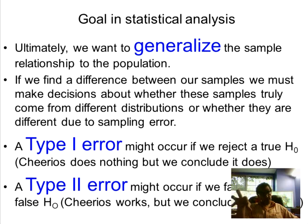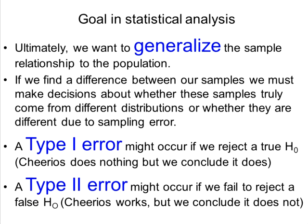When we make these decisions, errors can be made. They have not-very-clever names: Type 1 and Type 2 errors. A Type 1 error occurs if we reject a true null hypothesis — in other words, Cheerios in fact does nothing but we accidentally conclude that it does something. A Type 2 error is when we fail to reject a false null — Cheerios actually works but we conclude it does not.